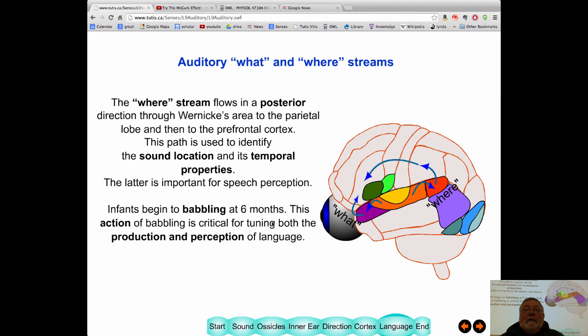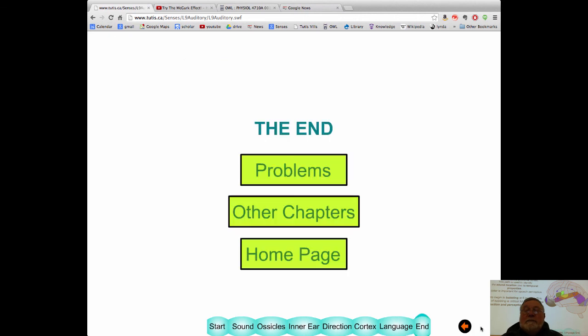When babies babble, they use the activation of both these areas to be able to perceive, to develop their own language. Activating these two streams in babbling activates the learning process of being able to both produce sounds and detect what the sound sounds like. And that's it for today. Thank you very much.